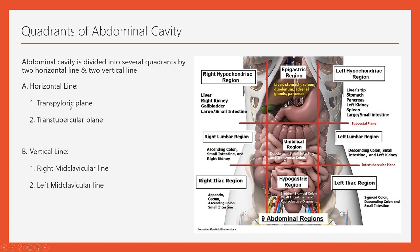The transpyloric plane passes over the pylorus of the stomach, at the midline joining the xiphoid process and the umbilicus. Structures that lie at the level of the transpyloric plane include the pylorus of the stomach, the fundus of the gallbladder, the hilum of the kidney, and specifically the lower border of the lumbar one vertebra, and so on.